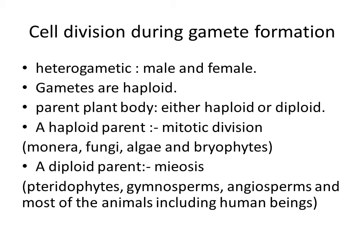Gametes in all heterogametic species are of two types: male and female. Gametes are haploid, though the parent plant body from which they arise may be either haploid or diploid. A haploid parent produces gametes by mitotic division. Several organisms belonging to Monera, Fungi, algae, and bryophytes have a haploid plant body. Organisms belonging to pteridophytes, gymnosperms, angiosperms, and most animals including human beings have a diploid parental body. It is obvious that meiosis, the reduction division, has to occur if a diploid body is to produce haploid gametes. In diploid organisms, specialized cells called meiocytes or gamete mother cells undergo meiosis. At the end of meiosis, only one set of chromosomes gets incorporated into each gamete.